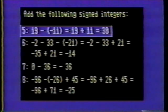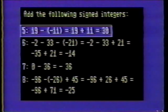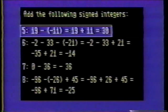Number five: nineteen minus negative eleven is nineteen plus eleven, and nineteen plus eleven is thirty.